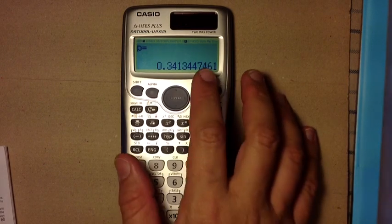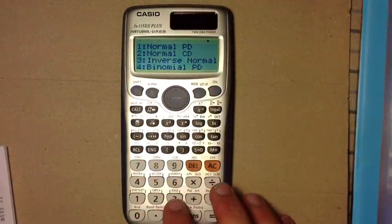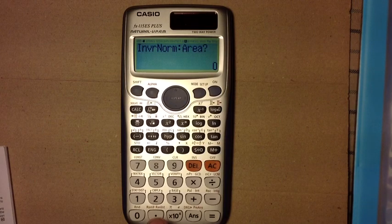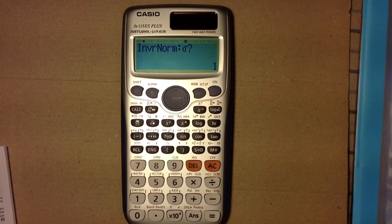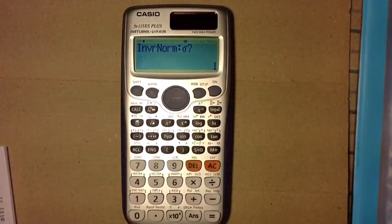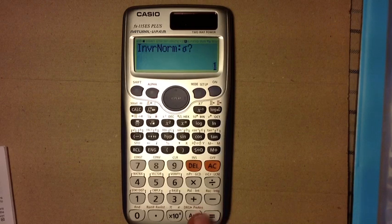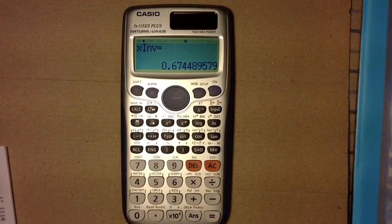We can do an inverse problem. So, if I select 3, let's say I have an area of, say, 0.75. And I'll ask you with the normal, the sigma is, I'm just going to accept that, the mean, and X inverse is 0.6744.